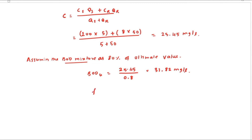Now we find the F value. F = K_P ÷ K_D = 1.0 ÷ 0.5 = 2.0.